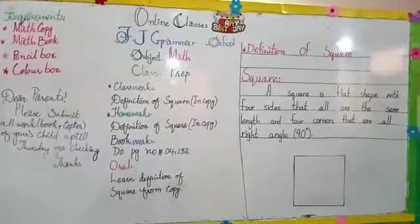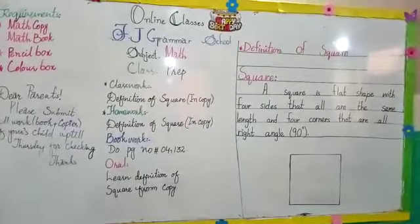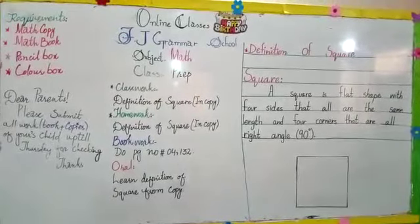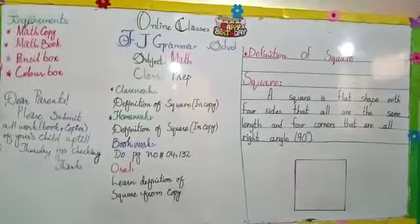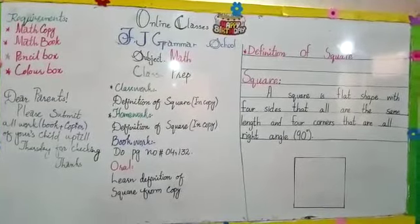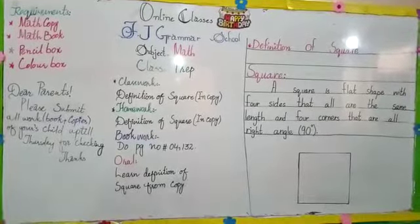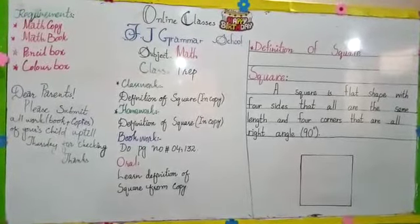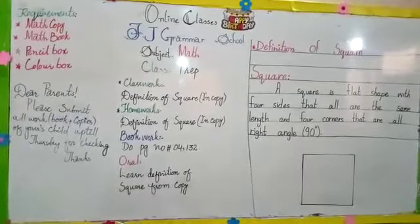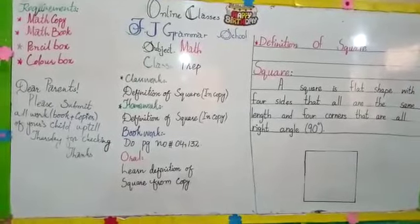First of all, our classwork is to write definition of a square from copy. One of your homework is to read the definition of a square. Then, homework is definition of a square. Bookwork is page 132. Oral: Learn definition of square from copy. Take out your copy and open.